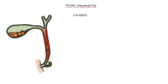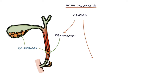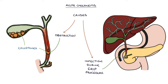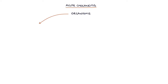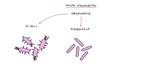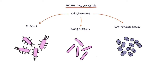There are two main causes of acute cholangitis. Firstly, obstruction in the bile ducts stopping the flow of bile — for example, gallstones in the common bile duct. And secondly, infection introduced during an ERCP procedure. The most common organisms are E. coli, Klebsiella species, and Enterococcus species.